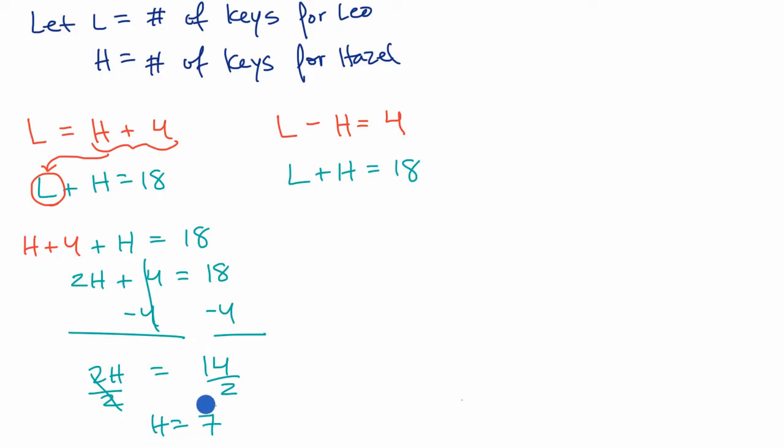We could use that information to say L = H + 4, so it's seven plus four equals 11. But they're not even asking for the number of keys Leo has. They're just asking for Hazel's keys. And we figured that out. Hazel has seven keys.